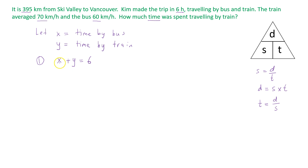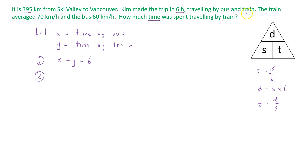We have two unknowns, x and y, so we're going to need another equation. We're also given the average speed of the train and the average speed of the bus, and the total distance traveled from Ski Valley to Vancouver. So the distance traveled by bus plus the distance traveled by train is going to equal the total distance, which is 395.